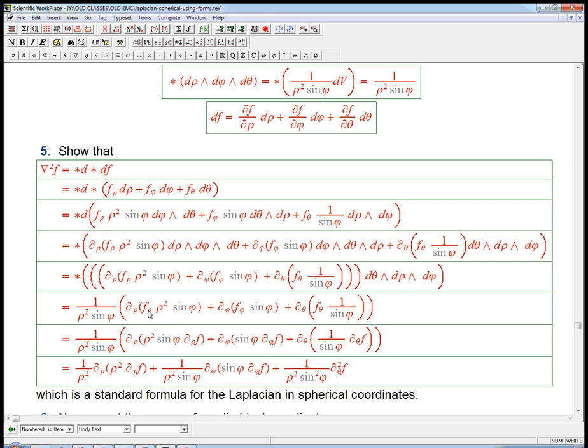You take the d, which is producing these derivatives. You do the star, which adjusts things based on the fact that d rho, d theta, and d phi were not orthonormal. Then you do another d, which just produces these new derivatives, and then you have to do one more star to get from a three form to a zero form, a function, and that produces this overall factor, which is the familiar factor that is inside the volume form.